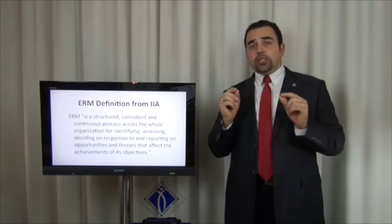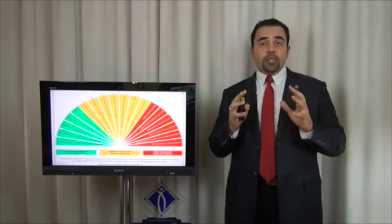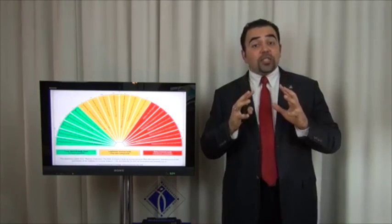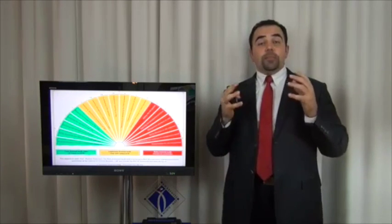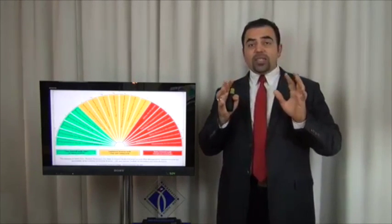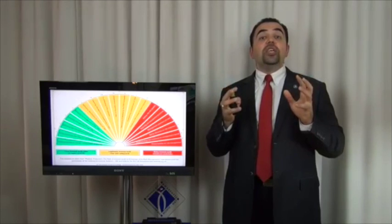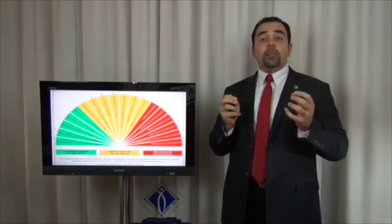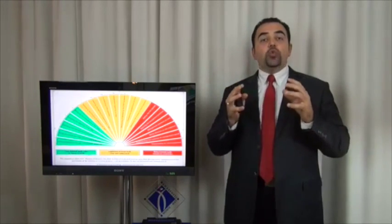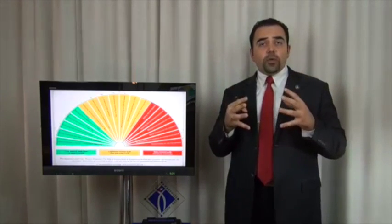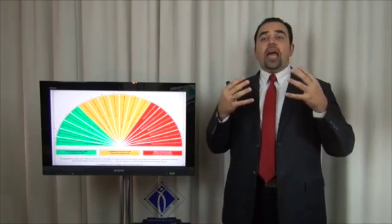As an internal auditor, you have core responsibilities related to risk management. Your core role is to provide assurance on the risk management processes — ensuring the organization is identifying and managing risk appropriately. You may also play an advisory role by helping the organization implement risk management processes, giving recommendations, facilitating, and coordinating — but you do not do the implementation, design the controls, or take responsibility for the risk management processes in place. You help the organization in identifying, assessing, and understanding what needs to be done.